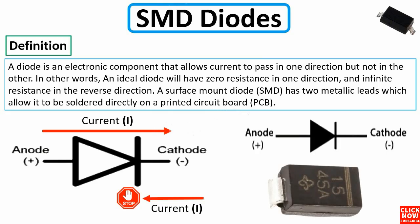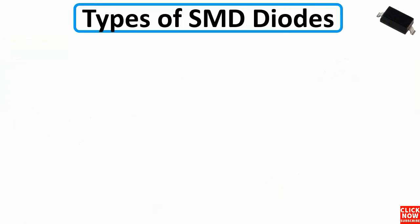A surface-mount diode has two metallic leads which allow it to be soldered directly onto the printed circuit board (PCB). As you can see, this is the symbol for a diode — here we have the anode or positive terminal, and here we have the cathode or negative terminal. The diode lets current pass from anode to cathode and blocks it in the other direction. On a real diode, there is a band that indicates the cathode.